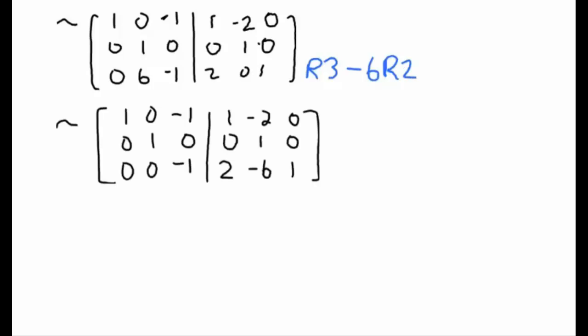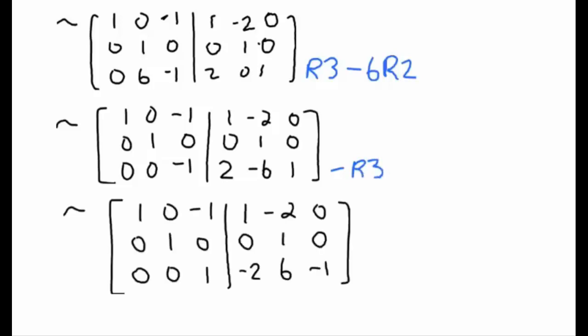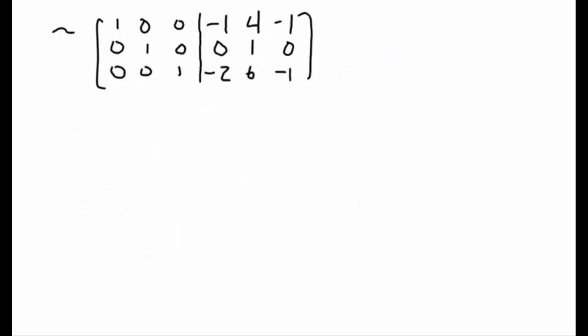To get our last leading one we are going to multiply row 3 by minus 1. And then the last operation we have to perform is row 1 plus row 3. And that leads us to the following augmented matrix. And you'll notice that over here on the left we have reduced row echelon form. In fact we have a 3 by 3 identity matrix.